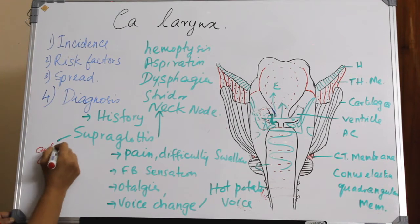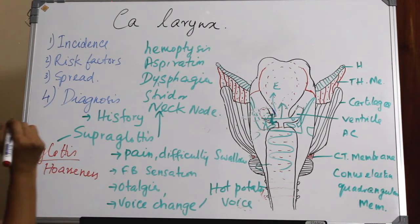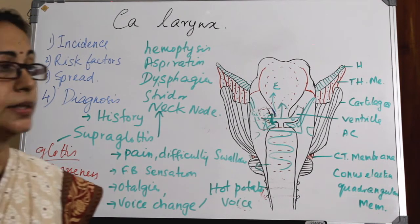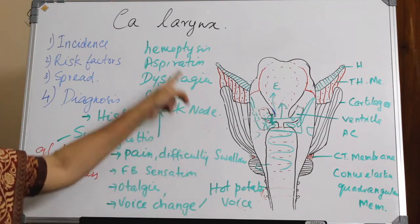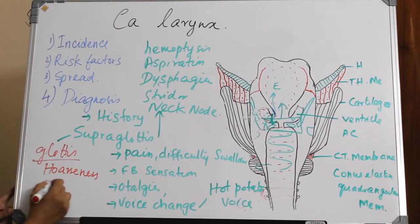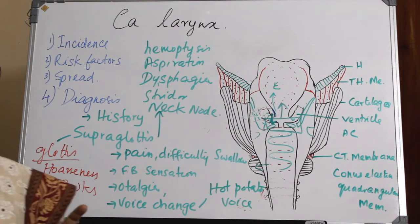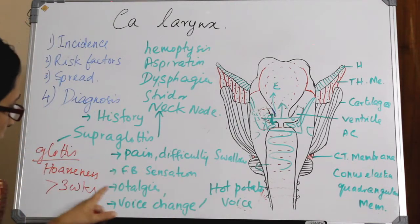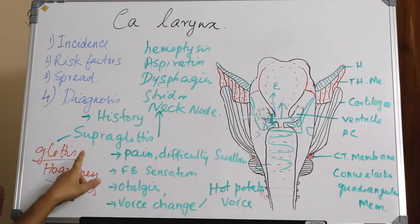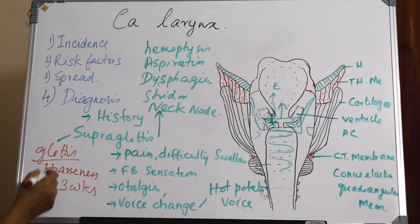For glottic CA, hoarseness is the earliest symptom. Any hoarseness persisting for more than three weeks should be investigated for CA larynx. Also, in an elderly male patient with a history of chronic smoking and alcoholism, even if it has not been three weeks, that patient presenting with hoarseness should be investigated in detail. The earliest symptom of glottic CA is hoarseness, making it easy to pick up early.